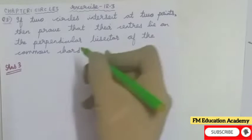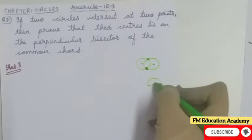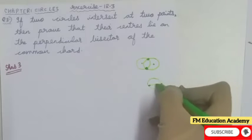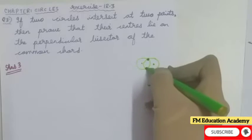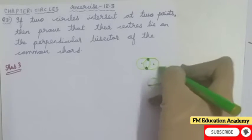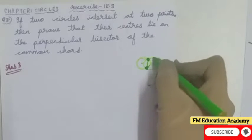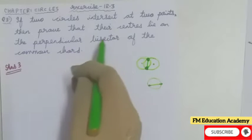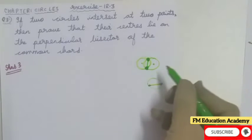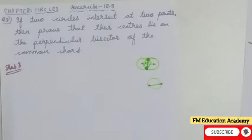A perpendicular bisector of the common cord — we know that a cord is a line segment which joins two points of a circle. So if we draw a cord from the two points where the circles meet, this cord belongs to both circles. Joining the two centers gives us the perpendicular bisector. That is the rough diagram.